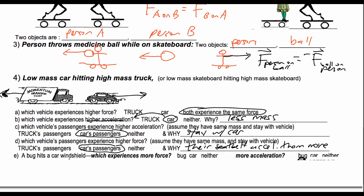A bug hits a car windshield. Which experiences more force — the bug, the car, or neither? Neither! The force of the bug on the car equals the force of the car on the bug, in opposite directions. Which experiences more acceleration? Clearly the bug does, because it has lower mass.